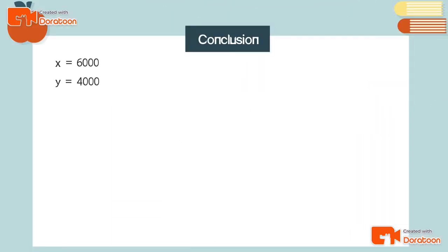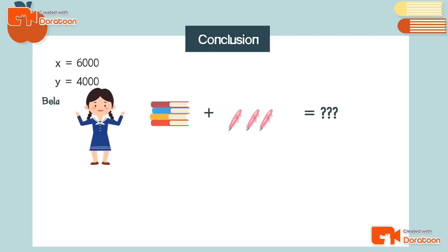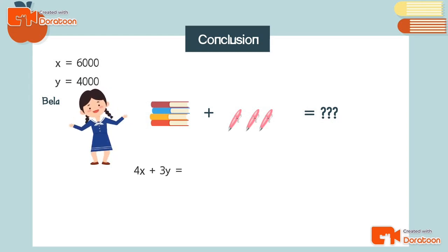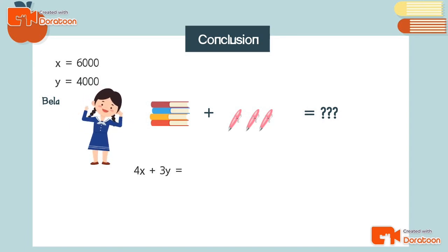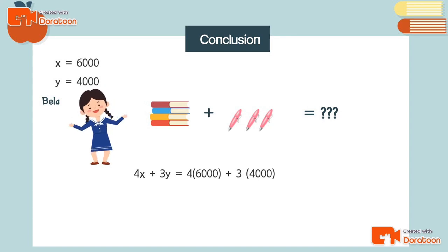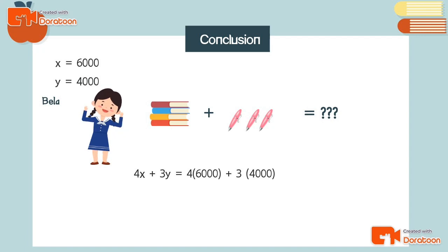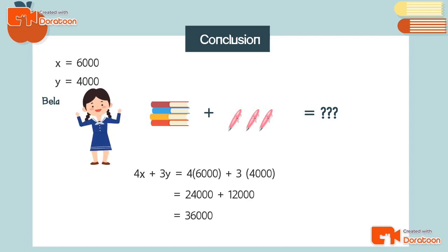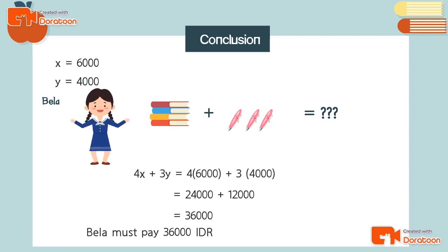Now we calculate how much Bella must pay for 4 notebooks and 3 pens: 4x + 3y = 4 × 6,000 + 3 × 4,000 = 24,000 + 12,000 = 36,000. So Bella must pay 36,000 Indonesian rupiah.